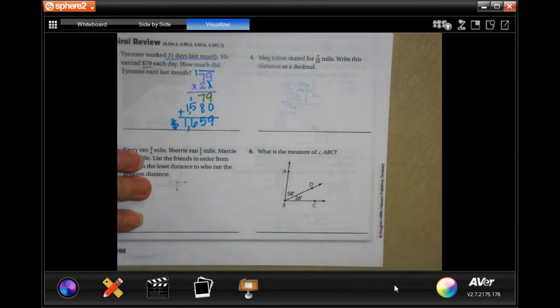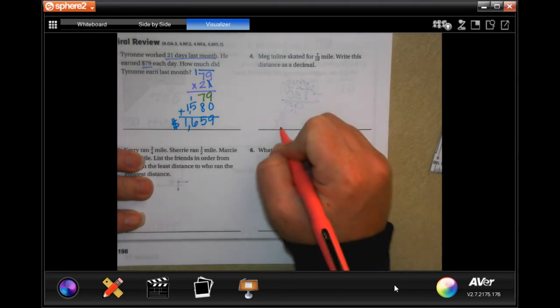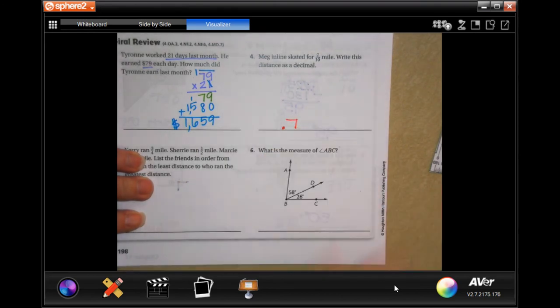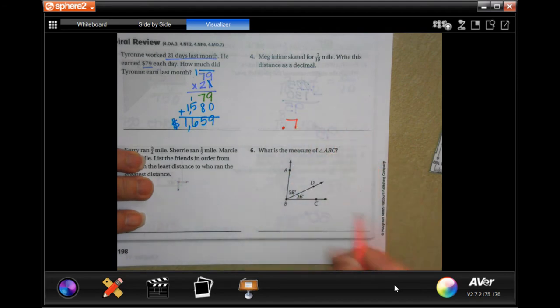Meg inline skated for 7 tenths of a mile. Write this distance as a decimal. Well, 7 tenths, all that means is that you have a 7 in the tenths place. Boom. That's the tenths place. Next would be hundredths, thousandths.